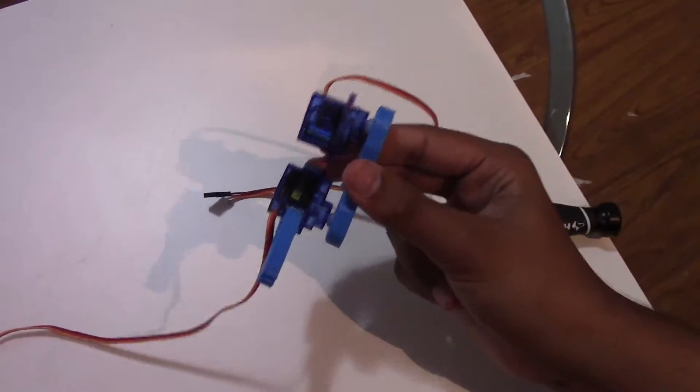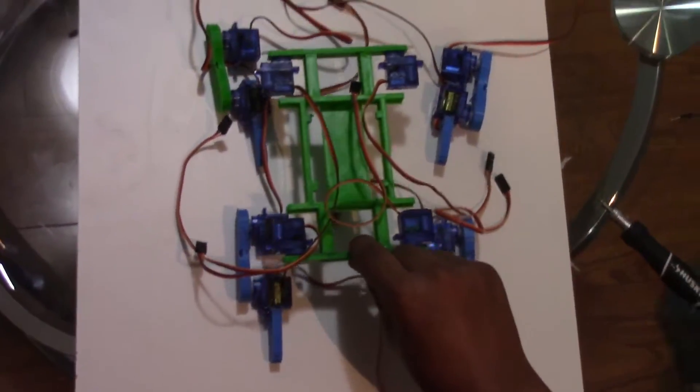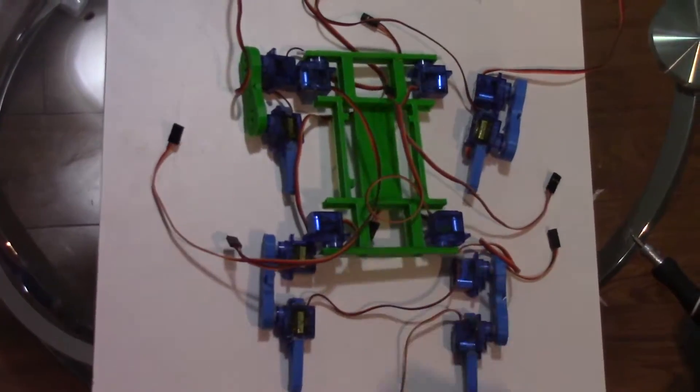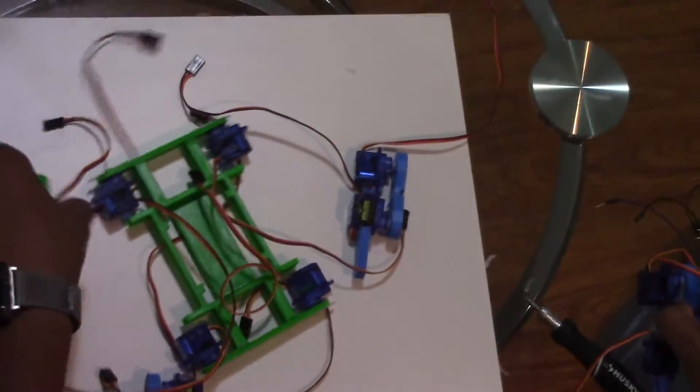So this is how the servos are going to be connected on to the base. That's going to go there, this one's going to come here, this one's going to go there, and this one's going to come here. And I'll show you that with one leg first. So these are the four legs you have made.